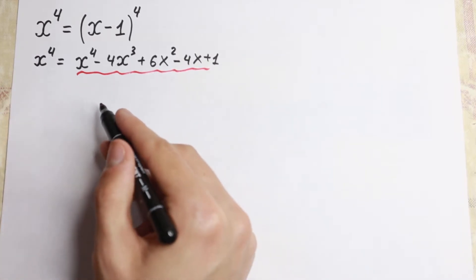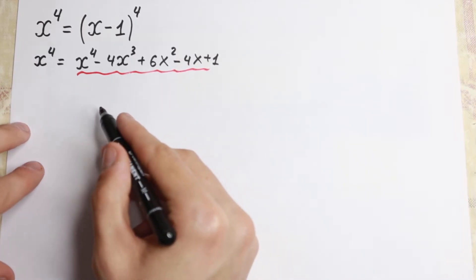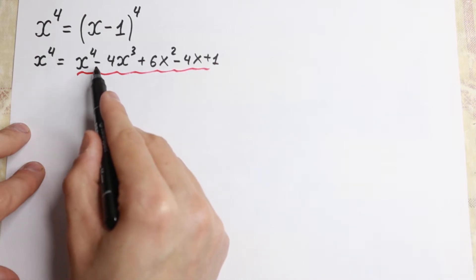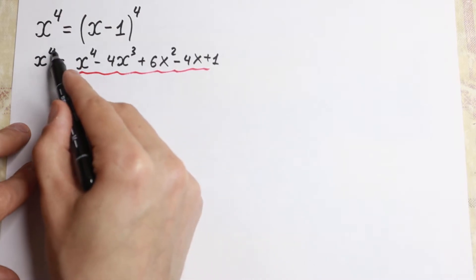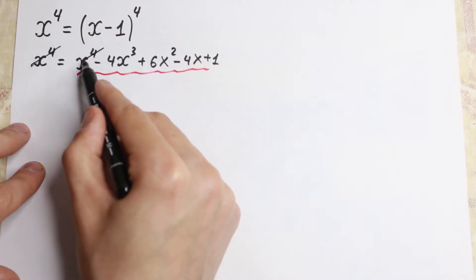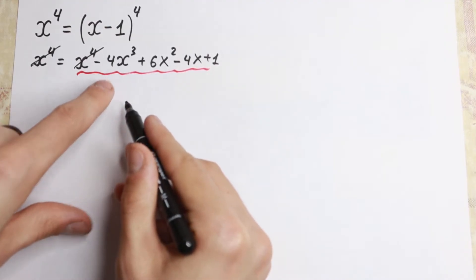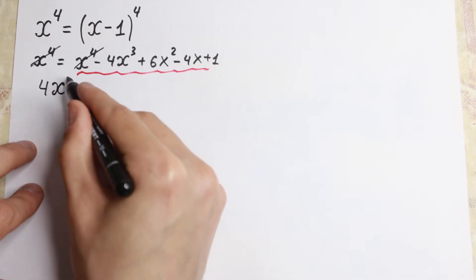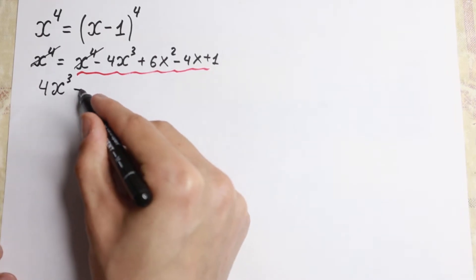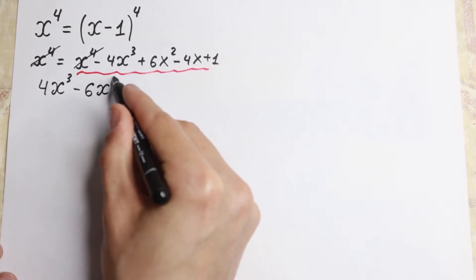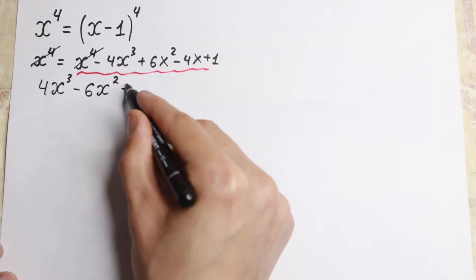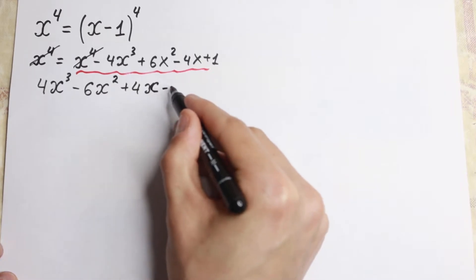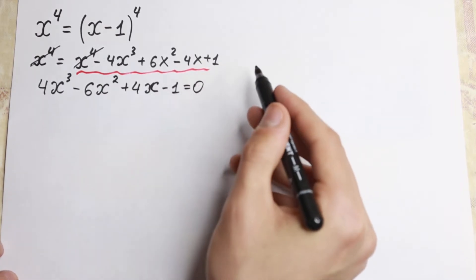Let's bring all these elements to the left hand side. We get the same terms with opposite signs, and x to the fourth power cancels from both sides. So we will have 4x cubed minus 6x squared plus 4x minus 1 equal to 0.